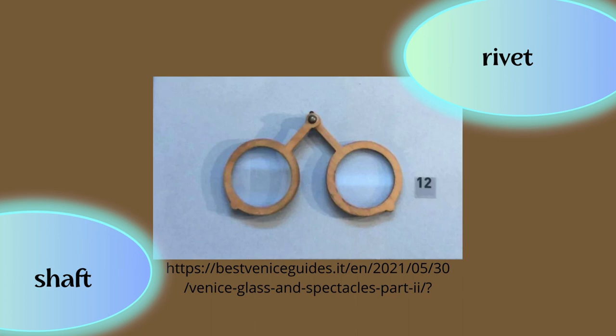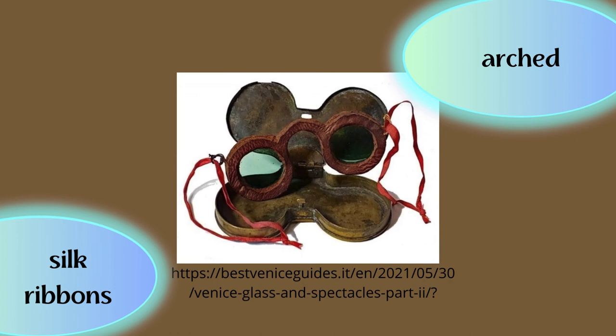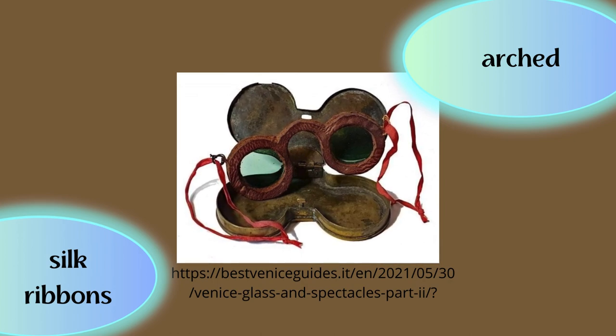Each wooden ring had a shaft — like a little stick or a little leg coming out of it — and these two shafts were connected with a rivet, which you can see in the middle. Can you imagine wearing this and feeling comfortable? Later on, the rings became arched, as you can see in the picture. The rings were covered with a smooth and soft piece of leather, and there were attempts to make the glasses more secure on the nose using silk ribbons.